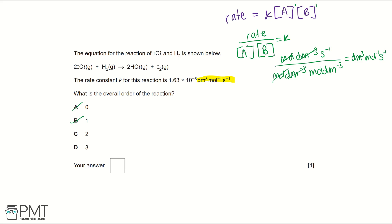So our overall rate constant, or our overall order of reaction, is going to be second order, which is C. So to get the mark for this question, you need to write C in the answer box provided.